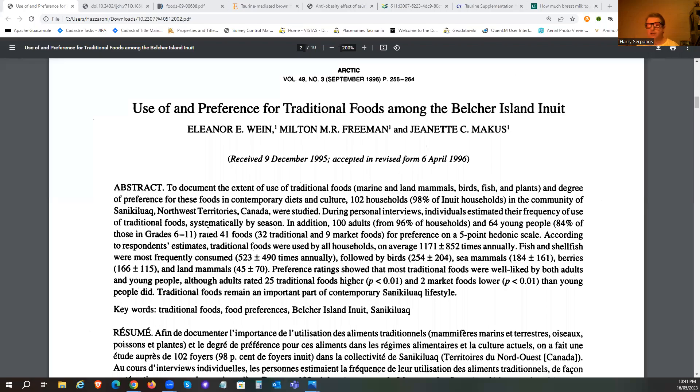We're looking at Inuit populations that live in very cold climates. This population lives in Canada. This was back in the 90s, this study. They noticed that these traditional people primarily consumed fish and shellfish, then birds, then sea mammals, then some berries that would be seasonal. Remember, these people are living in Canada, so they do have access to seasonal fruit. Land animals being the least of their foods.